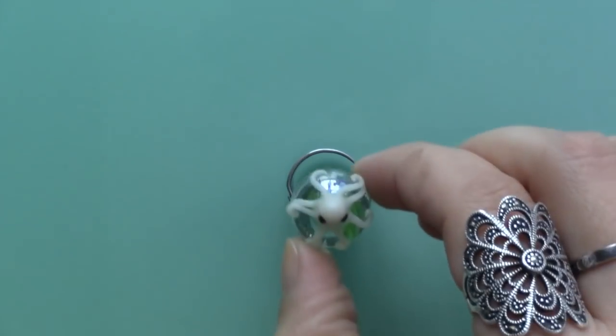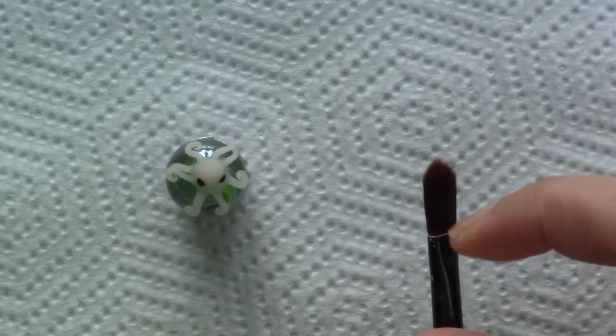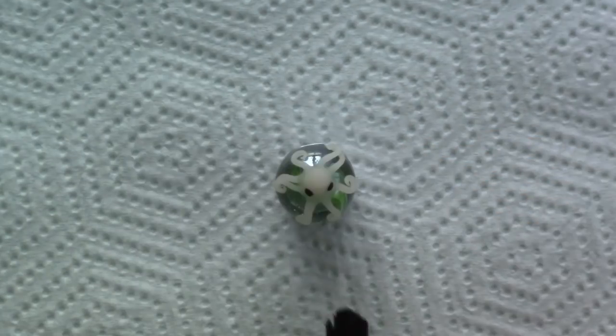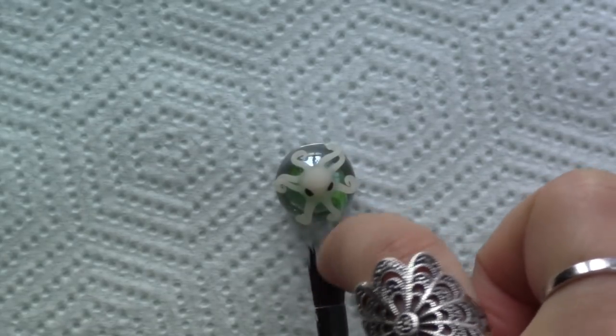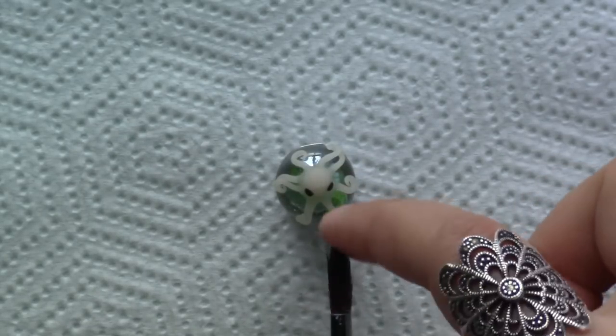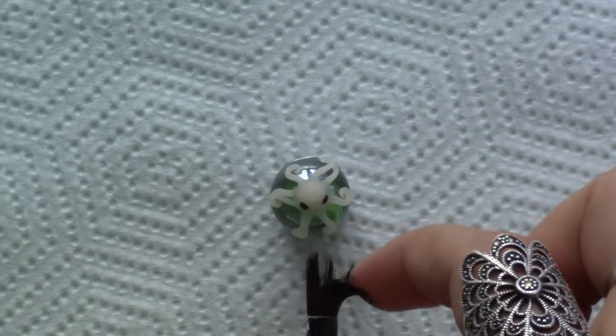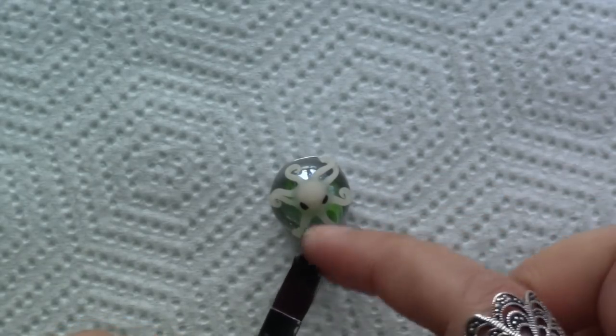Then I baked my octopus for 15 minutes. To create the illusion of spots on his skin, I let the octopus cool down and then used a brush to flick black paint on his body. It took me a while to get the angle right and at one point I was getting paint everywhere but on the octopus, but you'll get the hang of it.